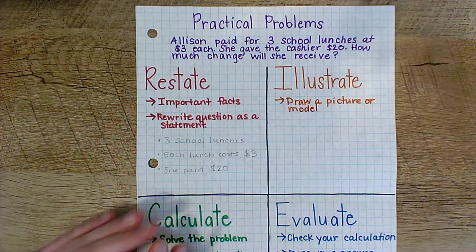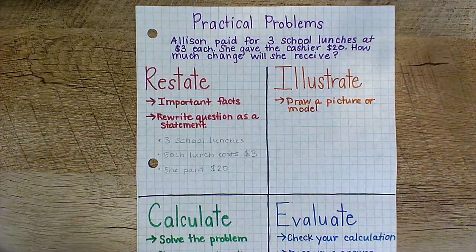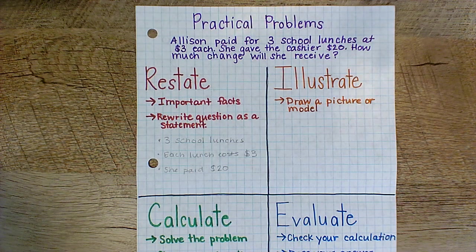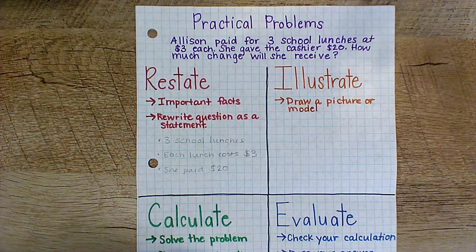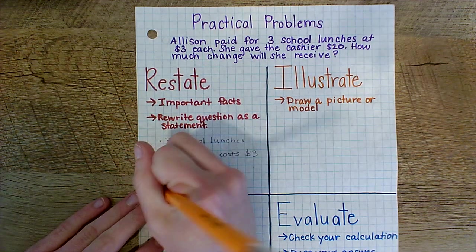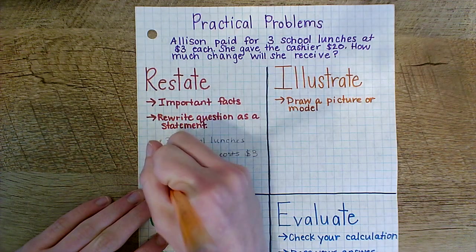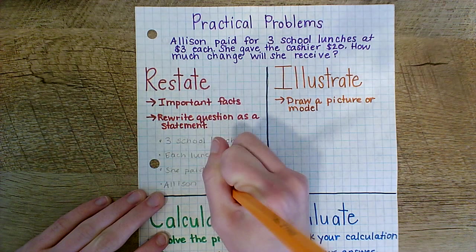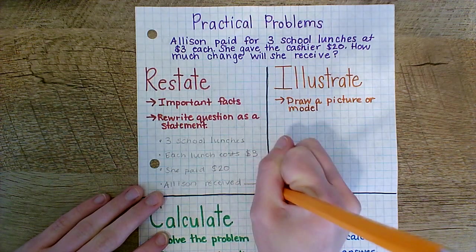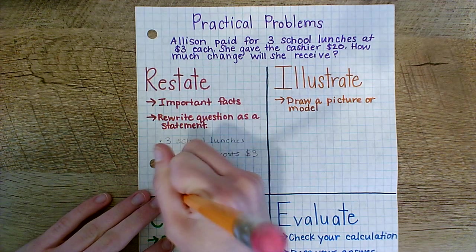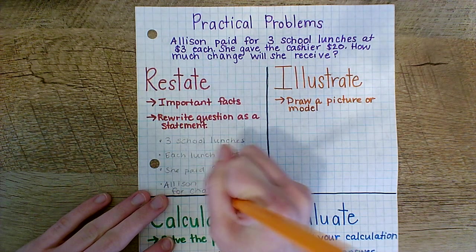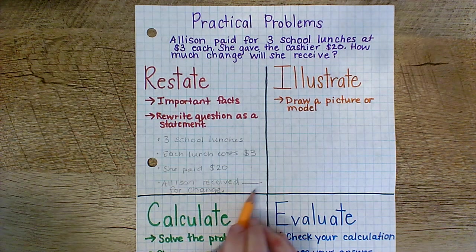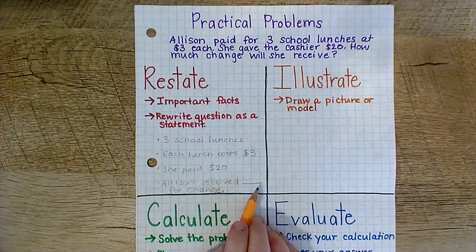And then we know she paid with a twenty dollar bill or twenty dollars all together. And then we need to think about the question. How much change will she receive? So now we need to think about how to write that as a statement.